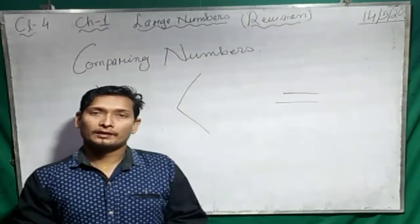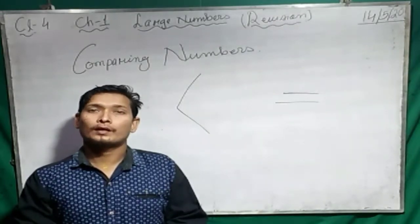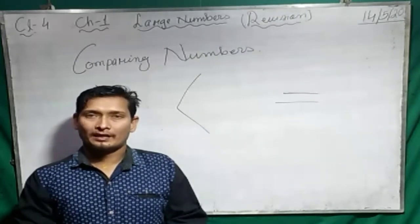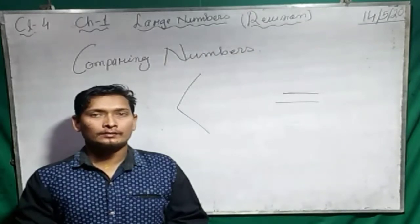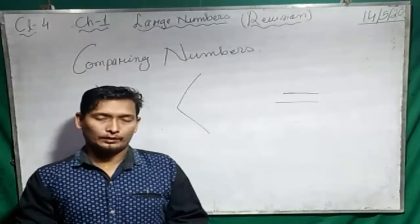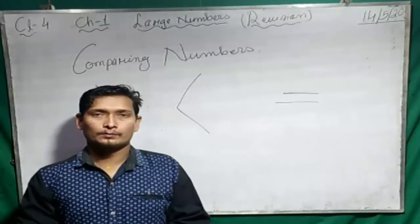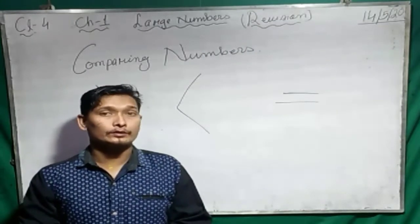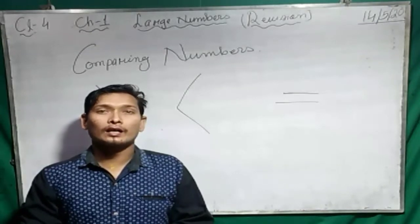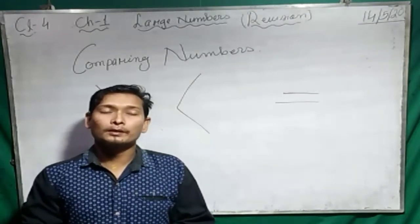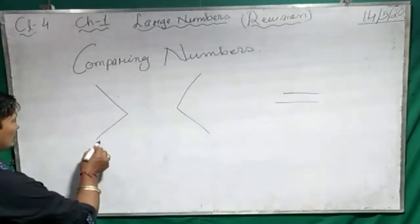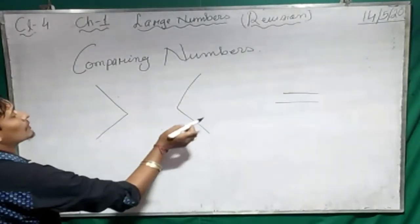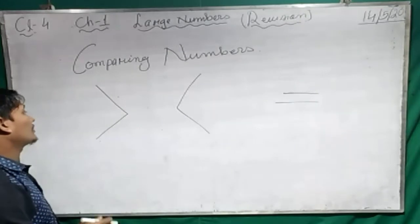Why are we comparing numbers? To find the greatest, smallest, and equal to — yes, greater, smallest, and equal to — by using a symbol. So: greater, smaller, and equal.